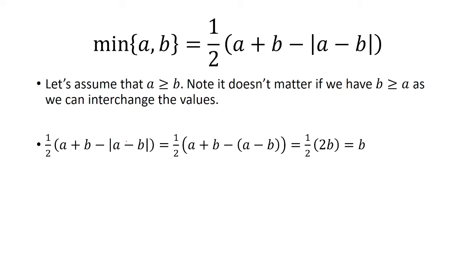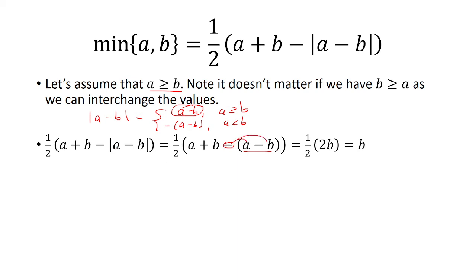We start with the right side of the equation. The absolute value of a minus b is a minus b if a is greater than or equal to b, and negative a minus b if a is less than b. So because a is greater than or equal to b, the absolute value of a minus b is just a minus b. Remember, you have to put parentheses around a minus b because we have a negative that has to distribute to both terms. So a minus a cancels, and b minus negative b gives us 2b. Half of 2b is b.